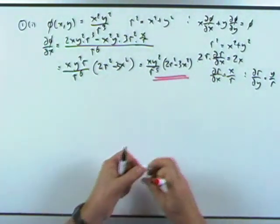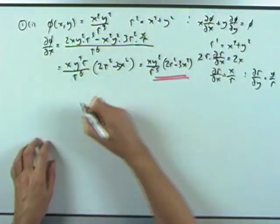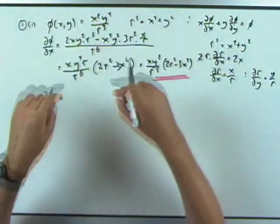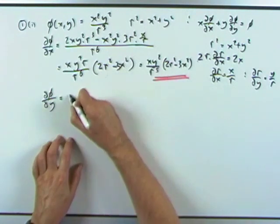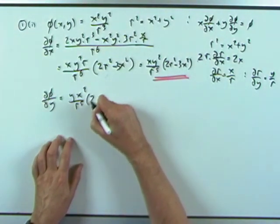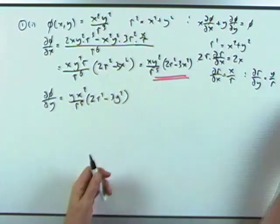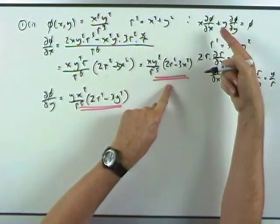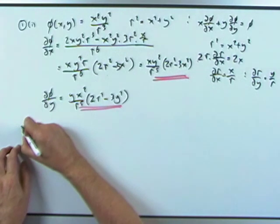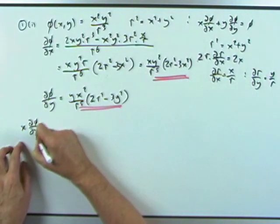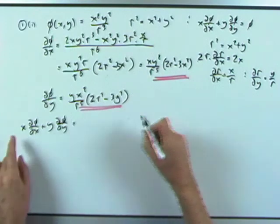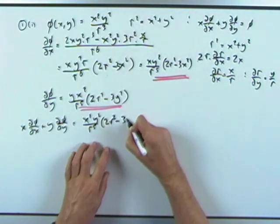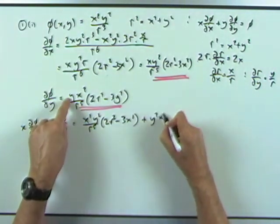That's the first part done. Now for partial phi by y, but this expression is completely symmetrical in x and y, so it's just a case of doing the same thing again, only replacing y's and x's. So partial phi by y will be xy squared... sorry, yx squared over r to the 5 times 2r squared minus 3y squared. Now feeding both partial derivatives back in: x times the first one gives x squared y squared over r to the 5 times 2r squared minus 3x squared,